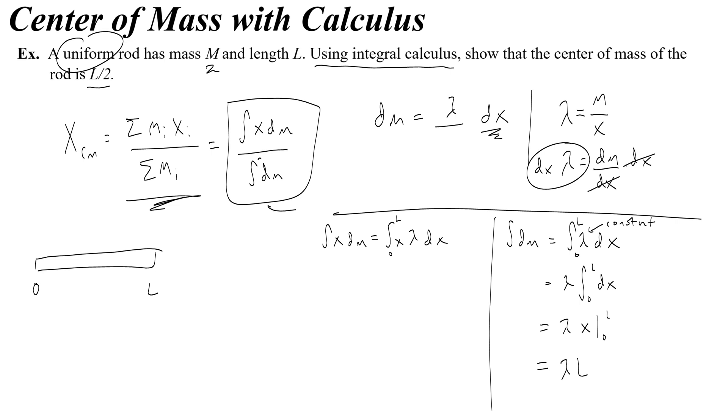For the top it's a little bit different. The lambda comes out because it's constant, so lambda, and then I integrate x dx from 0 to l, but now I'm actually going to get a more reasonable integration that's not just x. I'm going to raise x to the power of 2, and then divide by that 2. Of course I still need to evaluate from 0 to l, and I'm going to get lambda l squared over 2 as my answer for the top of that fraction.